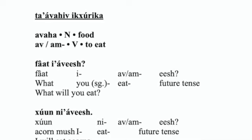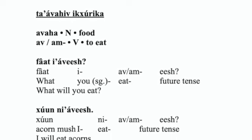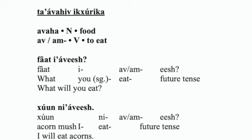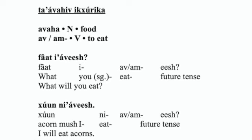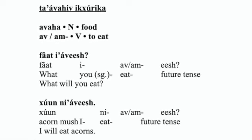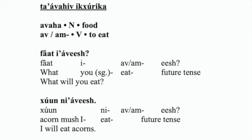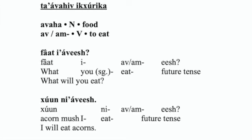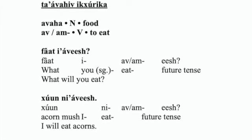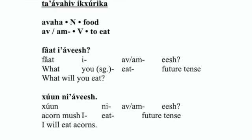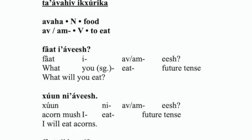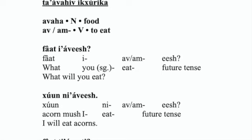Then we have khuniawish. Khuniawish — acorn mush, I eat, future tense. I will eat acorns. Khuniawish.